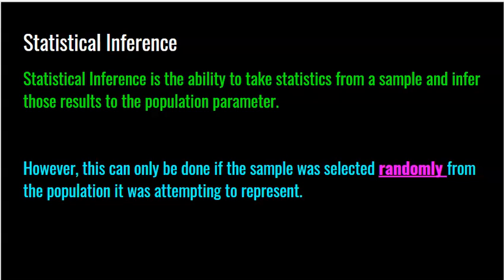The same thing is true for proportions. We have this true proportion p from the population that we want to know, so we look at a clue — our sample proportion. As long as that sample was selected from the population that we care about and selected randomly, we should be able to take the information from that sample proportion and infer it to the population proportion. The key is simple: the sample needs to be selected randomly and from the population you care about.